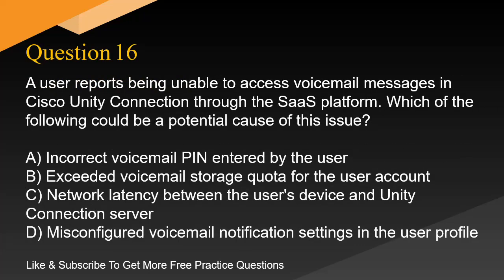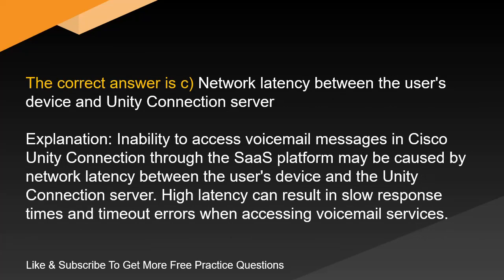Question 16. A user reports being unable to access voicemail messages in Cisco Unity Connection through the SaaS platform. Which of the following could be a potential cause of this issue? A. Incorrect voicemail PIN entered by the user. B. Exceeded voicemail storage quota for the user account. C. Network latency between the user's device and Unity Connection server. D. Misconfigured voicemail notification settings in the user profile. The correct answer is C. Network latency between the user's device and Unity Connection server. Inability to access voicemail messages in Cisco Unity Connection through the SaaS platform may be caused by network latency between the user's device and the Unity Connection server. High latency can result in slow response times and timeout errors when accessing voicemail services.